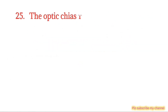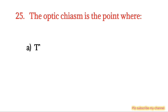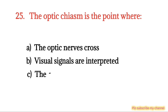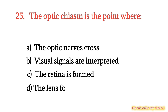MCQ number 25. The optic chiasm is the point where: Option A: The optic nerves cross. Option B: Visual signals are interpreted. Option C: The retina is formed. Option D: The lens focuses light. The right option is Option A.